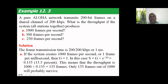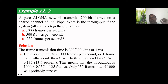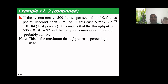A throughput of 13.5% means only 135 frames out of 1000 reach the destination — that is very poor. 865 packets are lost. If the system creates 500 frames per second, G becomes 0.5, so the rate is halved.